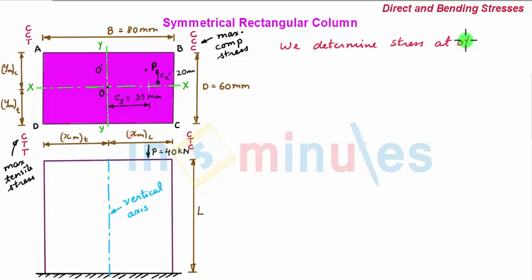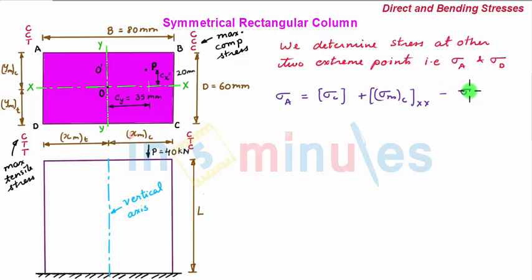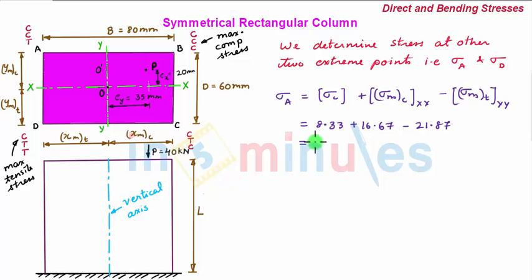Now we determine the stress at the other two extreme points, point A and point D. The stress at point A is given as the direct compressive stress plus sigma max of compression about the XX axis minus sigma max of tension about the YY axis. Substituting the values: 8.33 + 16.67 − 21.87, which gives 3.13 N/mm². Since the value is positive, the resultant stress at point A is compressive.